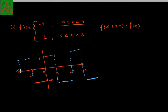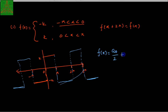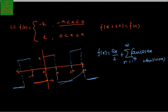So what are we actually doing? We are calculating the approximation of this square wave. As per the theory, the approximation of this square wave is the Fourier series: f(x) = a0/2 + summation from n=1 to infinity of (an cos(nx) + bn sin(nx)).